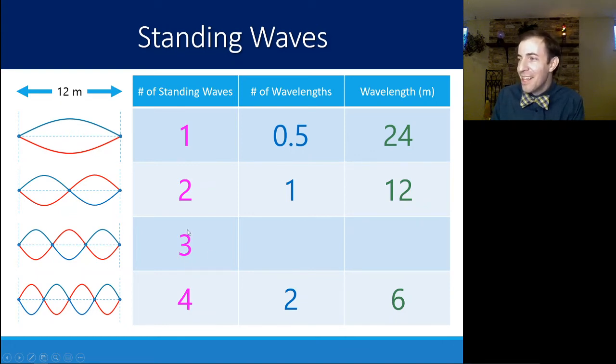So looking at this here then, three standing waves would mean that's actually one and a half wavelengths. You'll notice that the number of wavelengths is always half the number of standing waves. Go ahead and predict what would the wavelength have to be for one and a half waves to fit into 12 meters. If one wavelength is here and then another half, really there's three standing waves in 12. Each standing wave is four meters. Two standing waves produce one wavelength. So that would be eight meters for a wavelength.